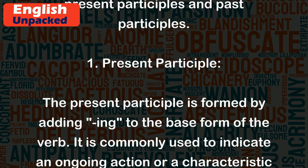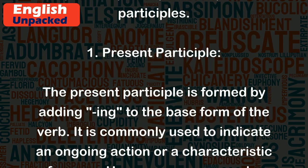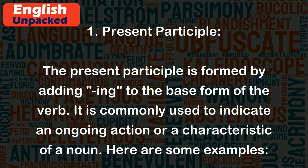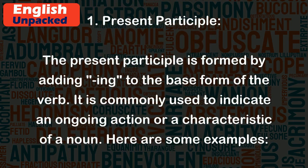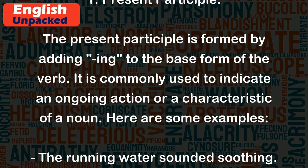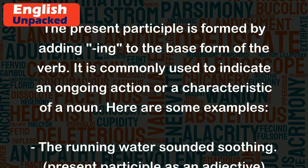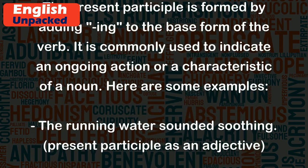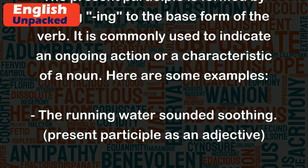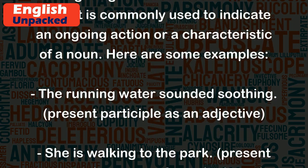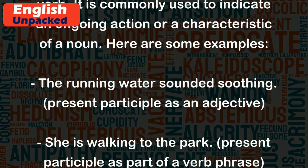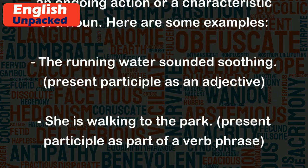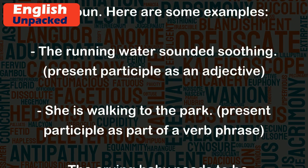Present participle: The present participle is formed by adding "-ing" to the base form of the verb. It is commonly used to indicate an ongoing action or a characteristic of a noun. Here are some examples: The running water sounded soothing.